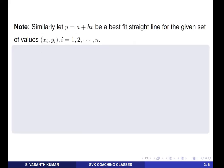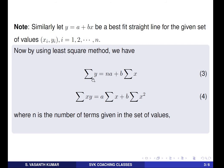Similarly, you can have another straight line of the form y = a + bx. Then by using the least square method, we have the formula: summation y = na + b·summation x, where n is the number of terms given in the set of values. By substituting the summation values you get a simultaneous equation. Solving those two simultaneous equations gives the values of a and b; substitute them in the standard form of the straight line. These two are the normal equations for a straight line.